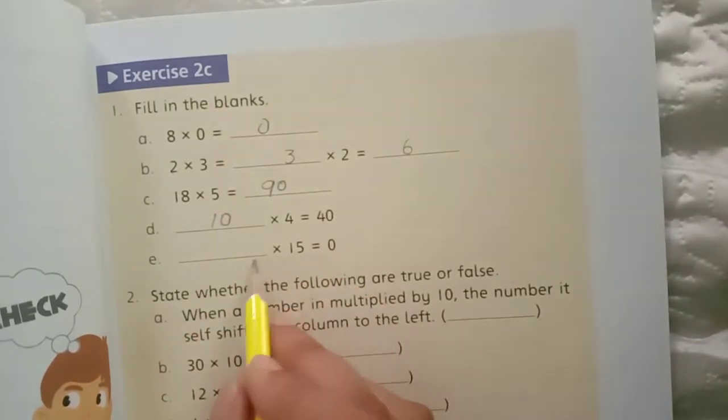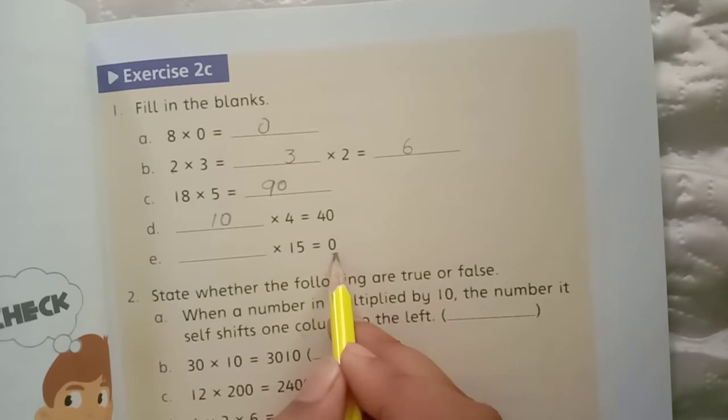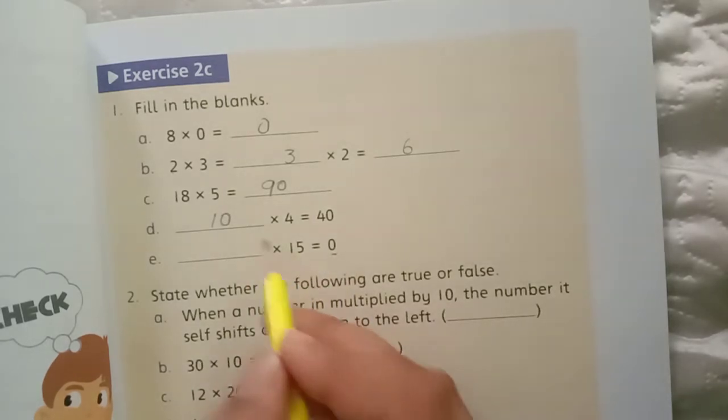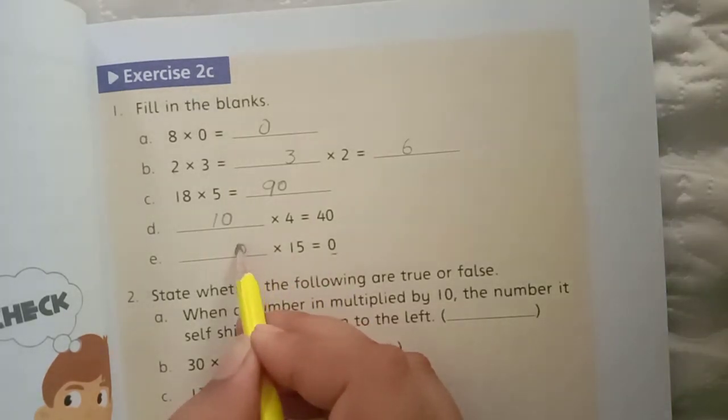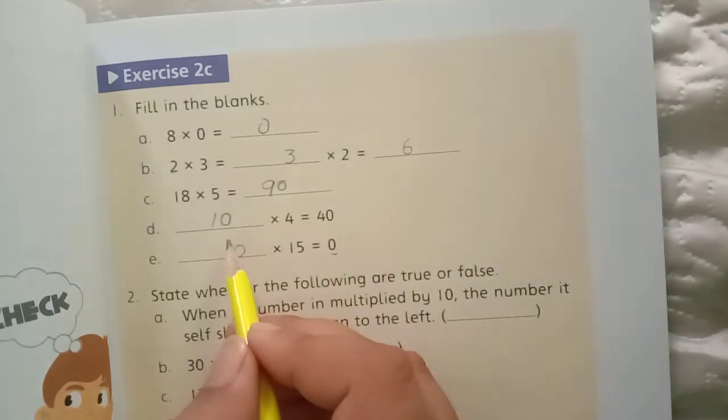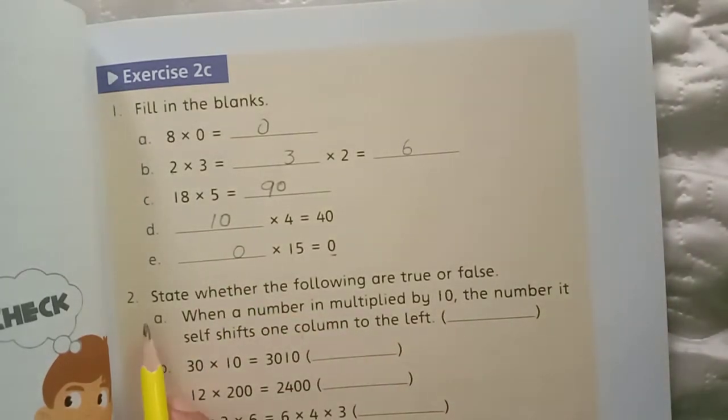Now we will multiply to get product 0. We will multiply 15 with 0. I have told you that when a number is multiplied by 0, then the number is converted to 0.